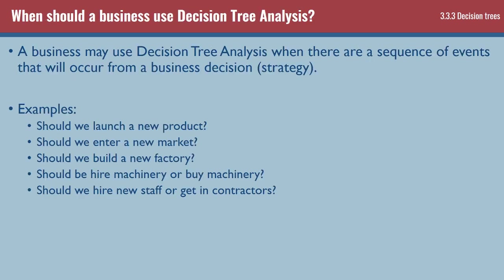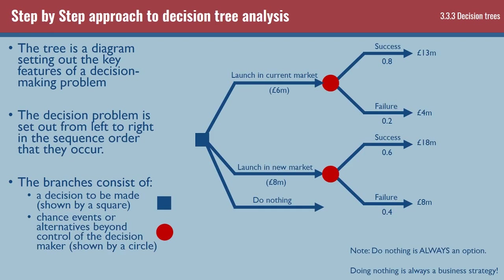Businesses would use decision tree analysis when there's going to be a sequence of events from any business decision. When we think about strategy, we're talking about a long-term plan. Examples of these decisions could be: should we launch a new product, enter a new market, build a new factory, hire or buy machinery, hire new staff, or outsource? Anytime there's a decision, there's going to be more than one option, and a decision tree assigns values to those options to determine which is probably best.